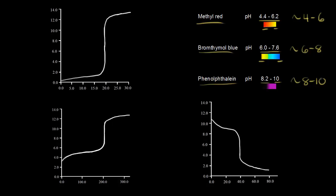Let's look at our titration curves and see which acid-base indicators we could use. We'll start at the top left. This was the titration curve for the titration of a strong acid with a strong base. At the equivalence point, the pH is equal to 7, so right here would be a pH equal to 7, and this was our equivalence point.